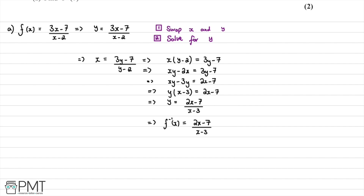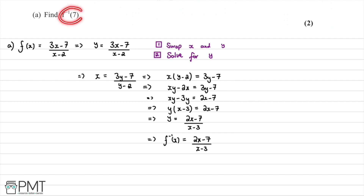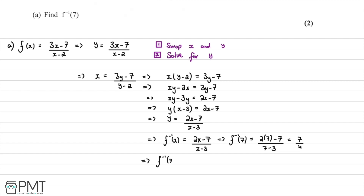Recalling that we want f⁻¹(7), we substitute x = 7: (2×7 - 7) / (7 - 3) = (14 - 7) / 4 = 7/4. Therefore f⁻¹(7) = 7/4.